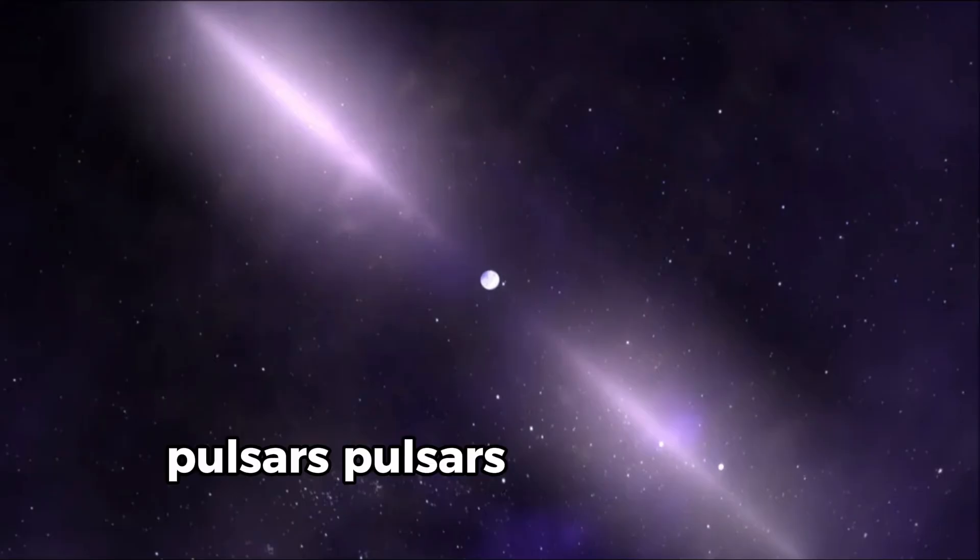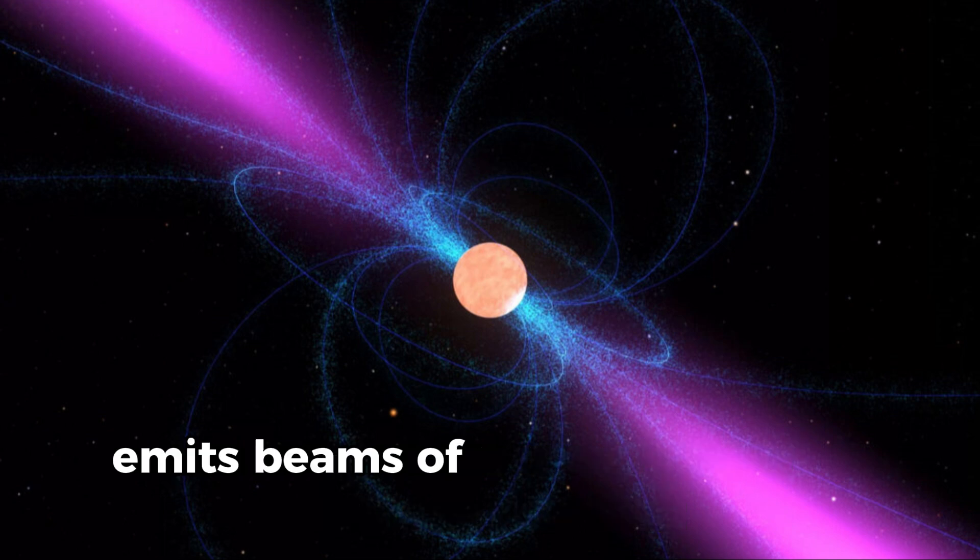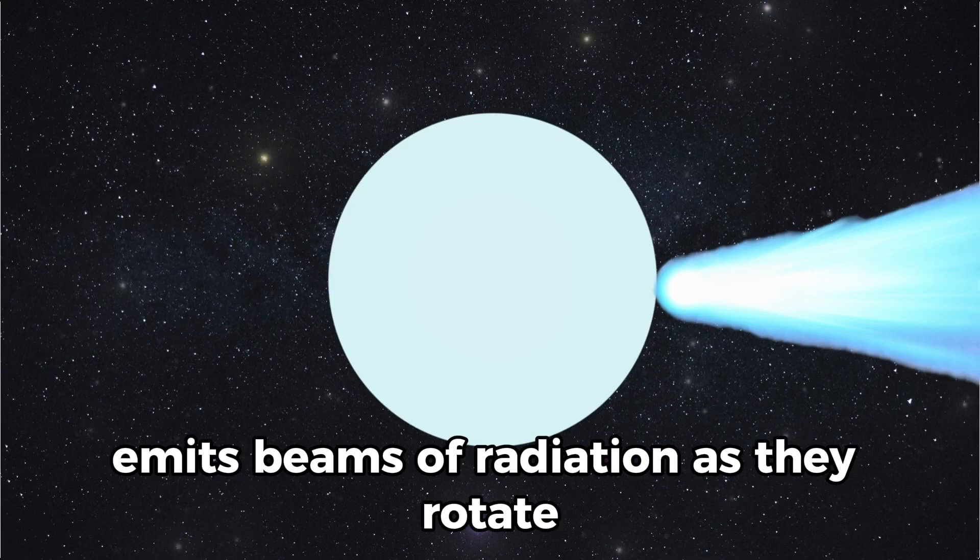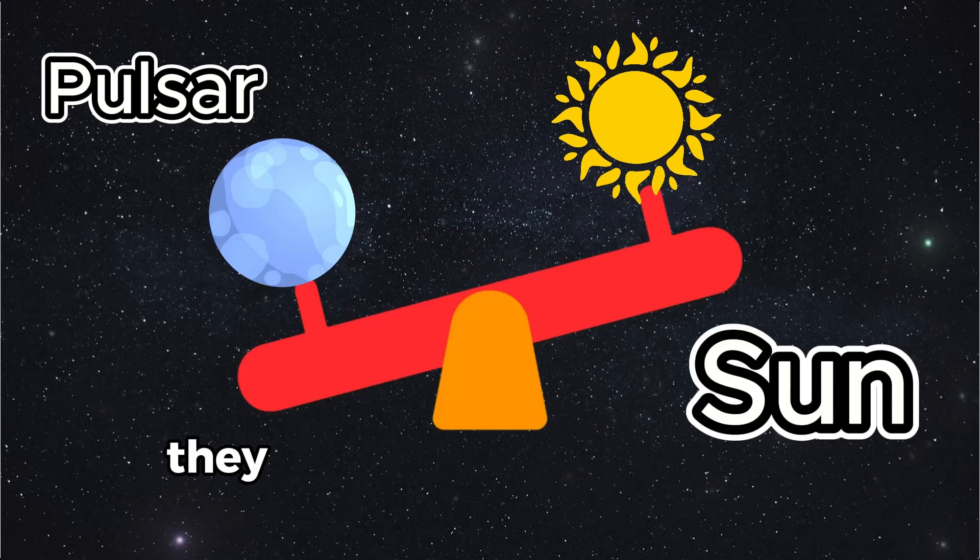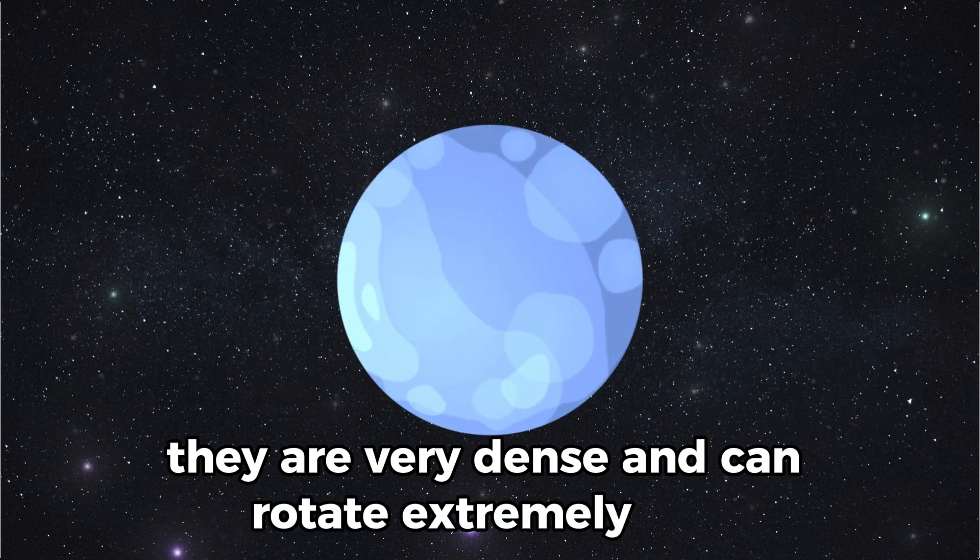Pulsars are a type of neutron star that emits beams of radiation. As they rotate, these beams sweep across space like a lighthouse, making them appear to pulse. They are very dense and can rotate extremely fast.